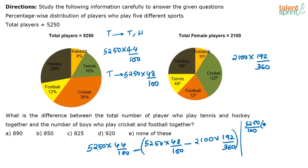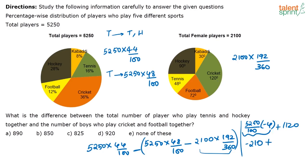5250 by 100 into minus 4 — that is 4 percent of 5250. We already found that out in the previous question as 210. Then you have plus 2100 into 192 by 360. This is the only calculation you have to do. This turns out to be 1120. So this will be 1120, minus 210 — since 4 percent of 5250 is 210. The answer you get will be 910, which is not there in the options, so the answer is E.